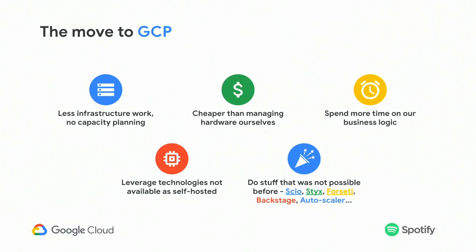It should also be cheaper. The idea was also to work at a different abstraction level and add value on top of these technologies. We have many success stories of this — STIX is for scheduling jobs, SEO is for dataflow jobs, Forseti for security, and the autoscaler that I'm going to talk about later.